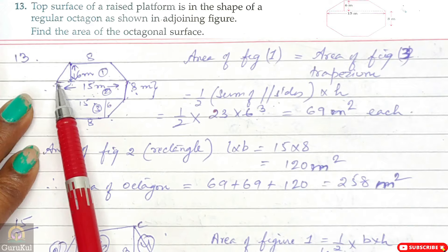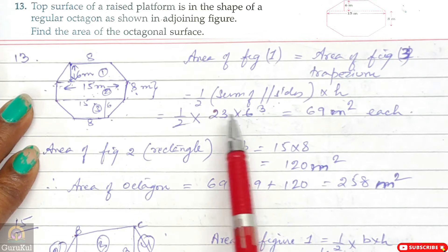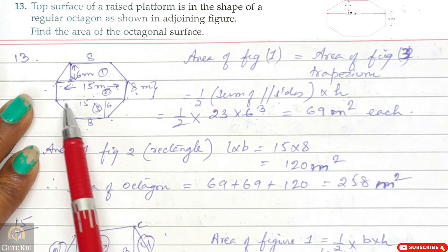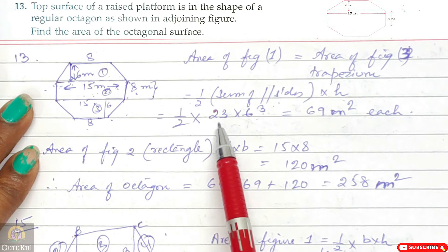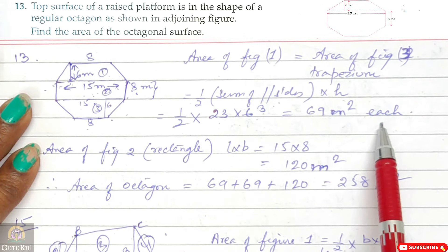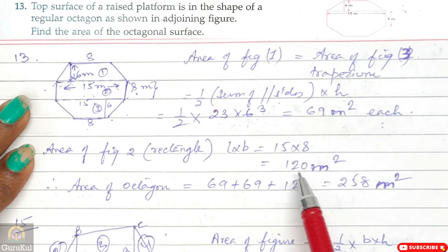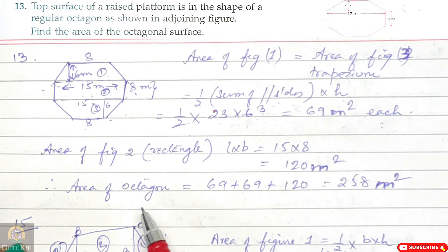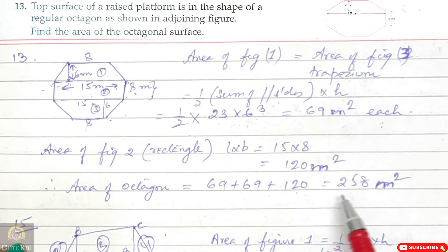Area of figure 2 (rectangle) = length × breadth = 15 × 8 = 120 m². Therefore, area of octagon = 69 + 69 + 120 = 258 m². This is the answer.